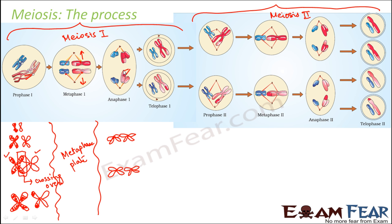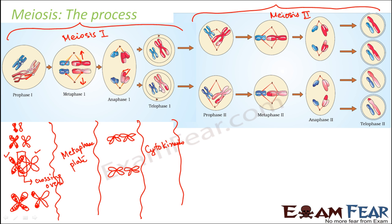The sister chromatids are still attached here. At the end of anaphase 1, telophase 1 starts. In telophase 1, cytokinesis starts — that is, division of the cytoplasm. Once the cytoplasm divides, the plasma membrane develops and two proper daughter cells are formed with half the number of chromosomes. So two haploid daughter cells are produced at the end of meiosis 1.